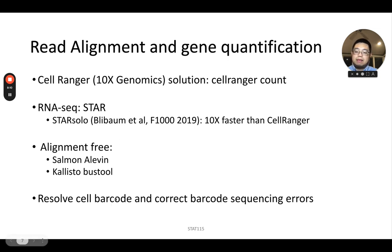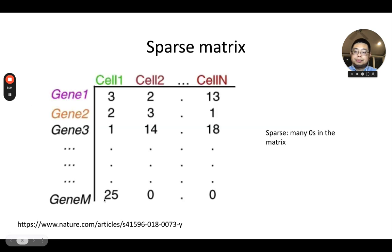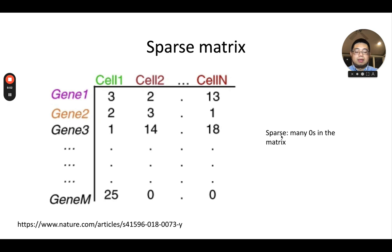One thing to note is that cell barcodes can have sequencing errors, so all of these tools perform some cell barcode correction. In the end you get a count matrix where each row is a gene, each column is a cell, and each entry is how many counts exist for that gene in that cell. In Python the rows are cells and columns are genes. Single-cell RNA-seq count matrices are sparse — meaning there are many zeros — and this imposes challenges in analyzing the data.